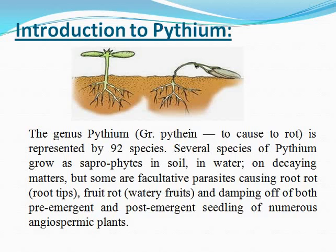Several species of Pythium grow as saprophytes in soil, in water, and on decaying matter, but some act as facultative parasites causing root rot, fruit rot, watery fruits, and damping off of both pre-emergent and post-emergent seedlings of numerous angiosperm plants.